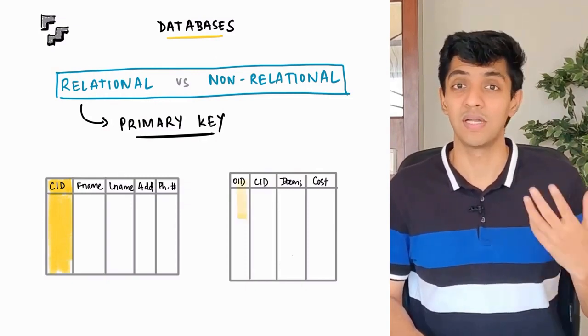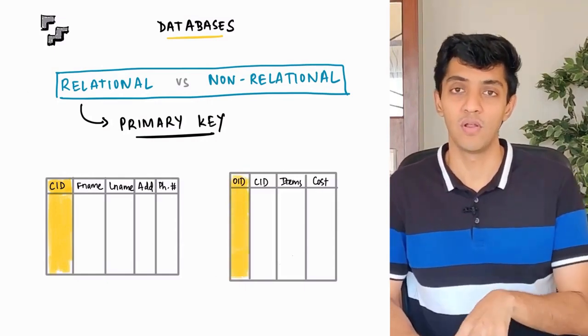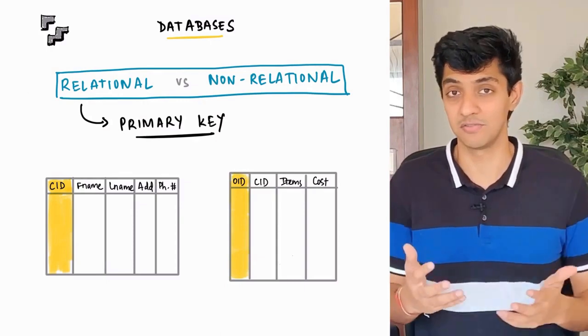Now, in our case, it's going to be the customer ID. The reason why you want to have a primary key is because it's going to help you a lot in terms of easy retrieval and easy updation of data.